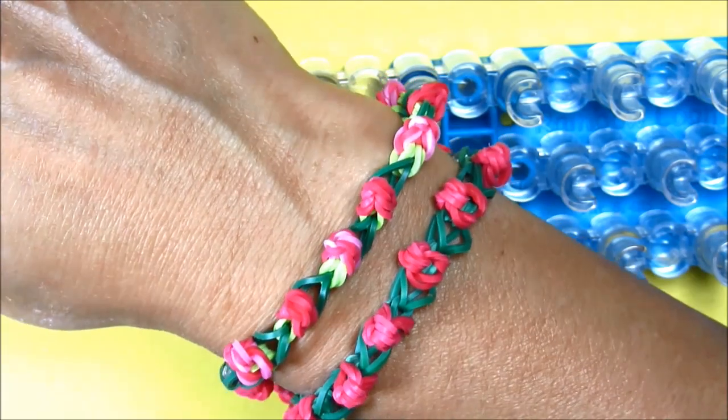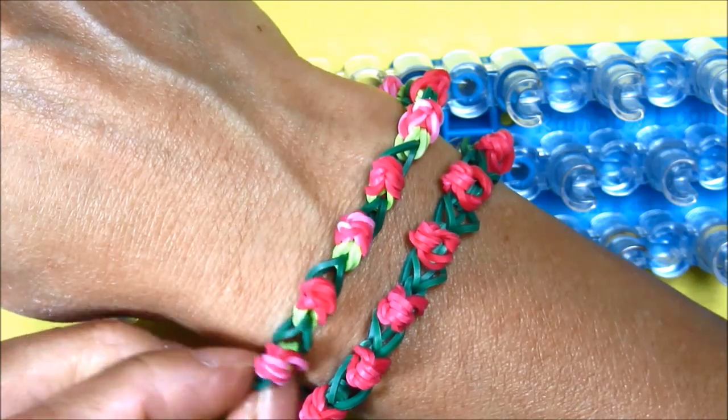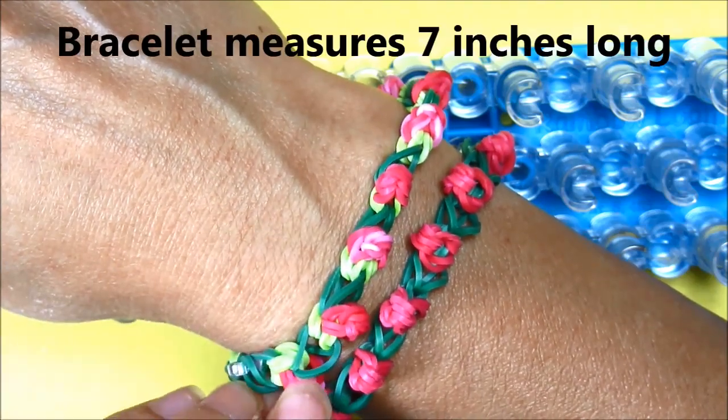Hi everyone, today I will be showing you how to make this rosebud bracelet. You'll need a c-clip and 49 rubber bands, and you can make it whatever color you want.